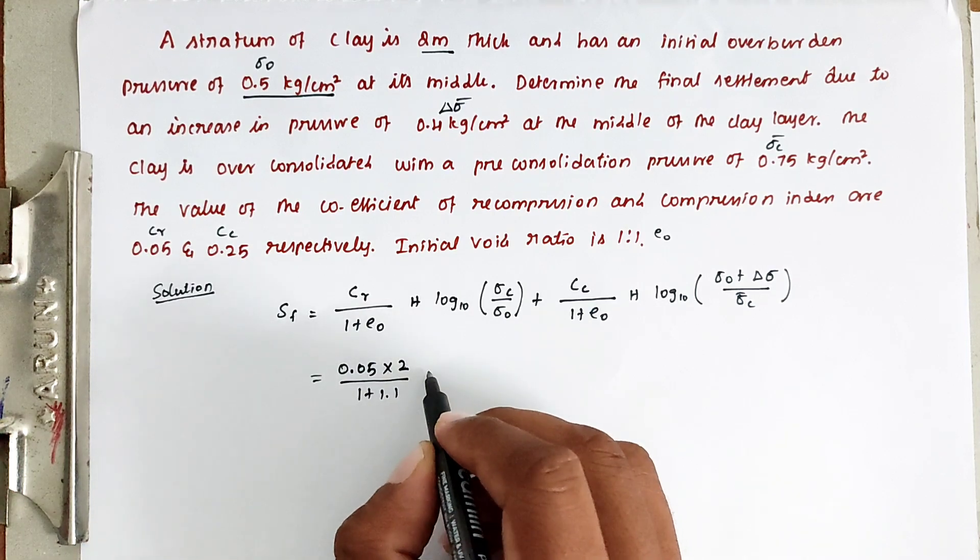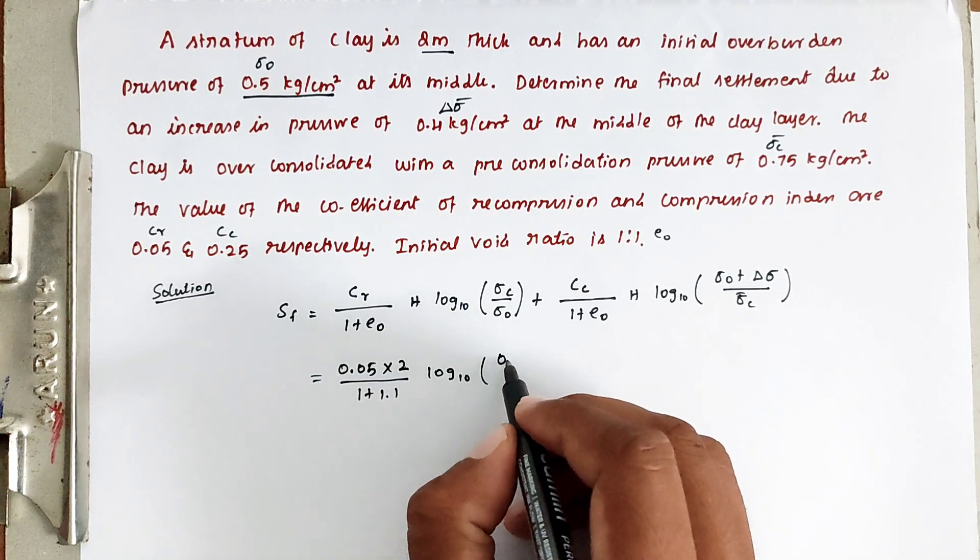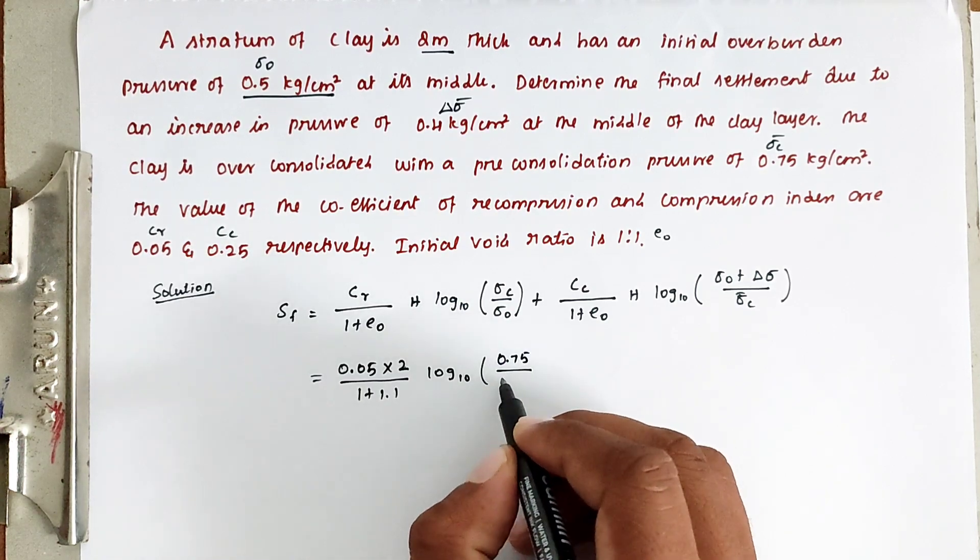Then log 10, so sigma c value is given, that is 0.75 divided by sigma naught value is 0.50.